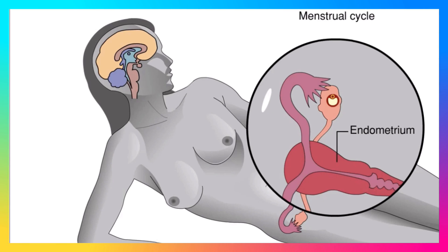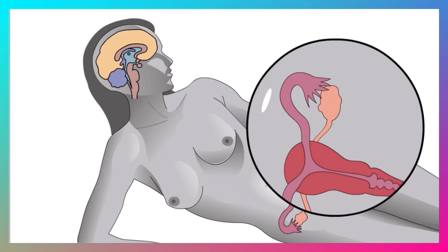Our discussion of the ovarian and menstrual cycles will show how hormones coordinate the activities of the ovaries and the uterus. The brain controls reproduction, acting via hormones produced by the pituitary gland.